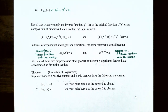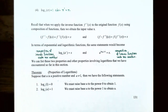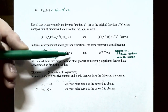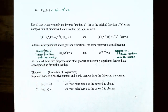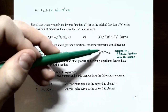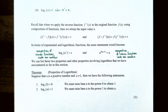Writing this in terms of logarithmic and exponential functions: if log base a is on the outside and a^x is the inside, then log_a(a^x) = x — the two inverse functions undo each other and return the exponent x. Conversely, if a^x is on the outside and log_a(x) is the exponent: a^(log_a(x)) = x, again returning the input x.